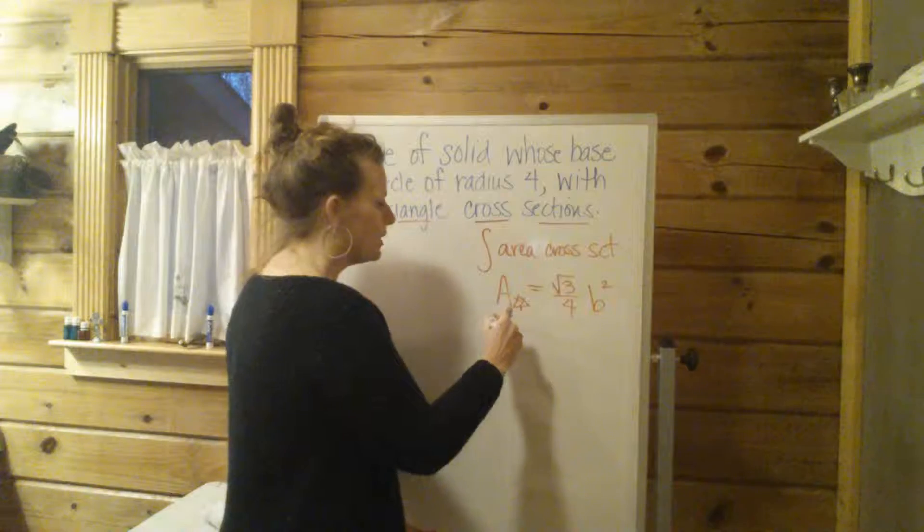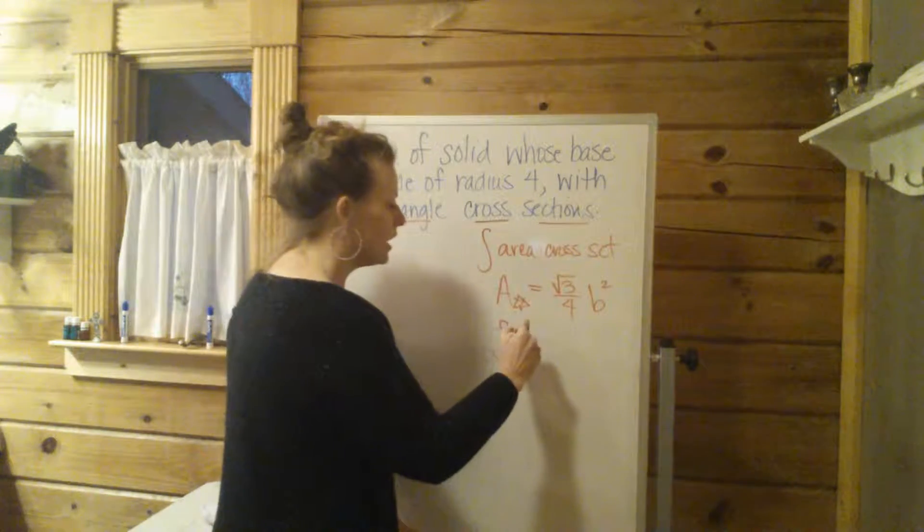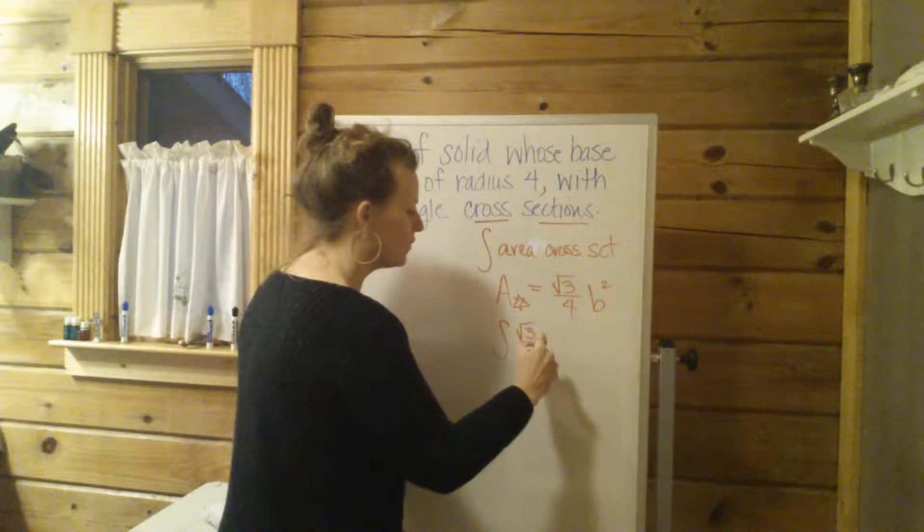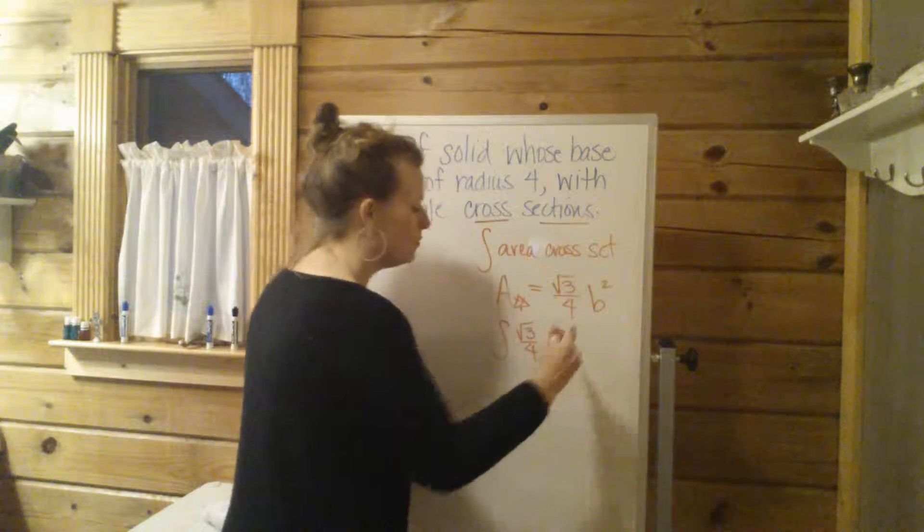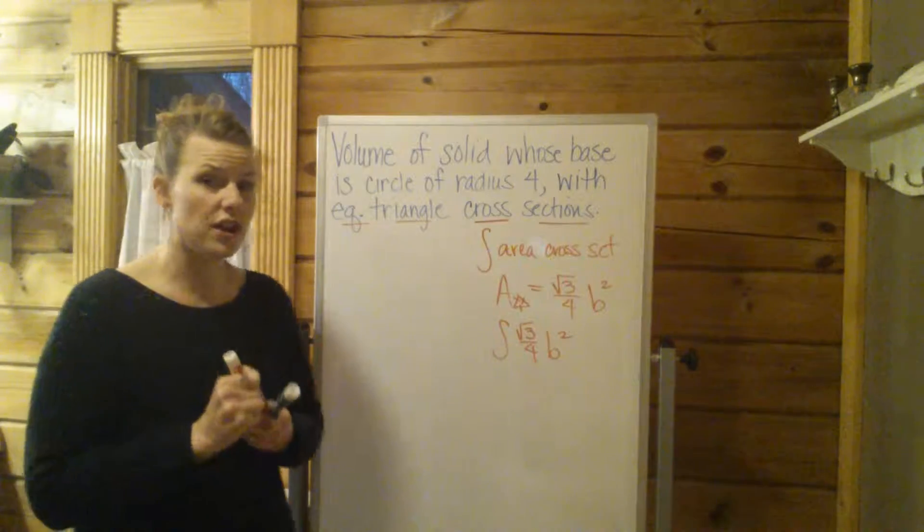So now we know that we are going to have the integral of the square root of 3 over 4 b squared. Now that's a good starting point.